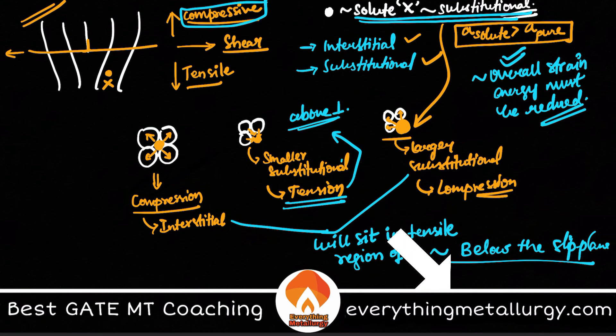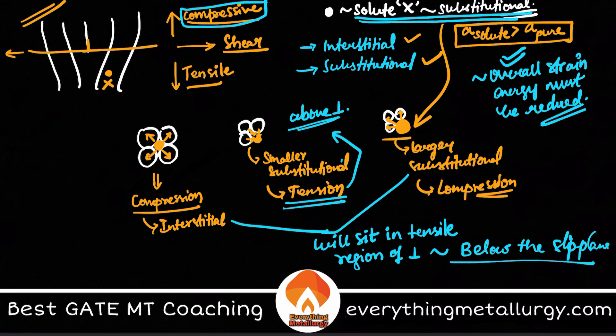I hope this video gave you a clear idea of how XRD and dislocation concepts are connected. From XRD you get the size relation, and using the size relation you decide placement in the strain field. Please hit the like button and share with GATE metallurgy aspirants. Around 40 days are left for GATE 2021 — all the best! Let me know in the comments about GATE 2022 batch queries.